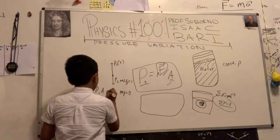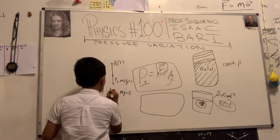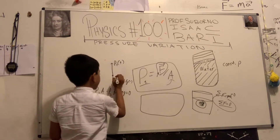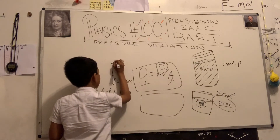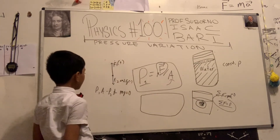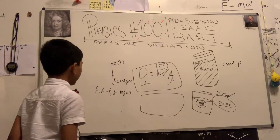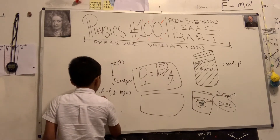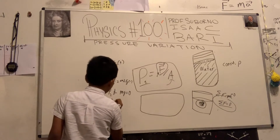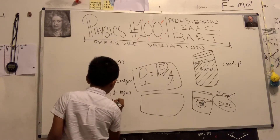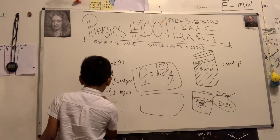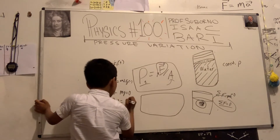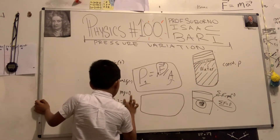This is P1 times A, because you have to solve for force. So technically F1 and F2. P1A minus P2A minus MG equals zero. Now let's factor out A, which gives us P1 minus P2 equals MG over A.